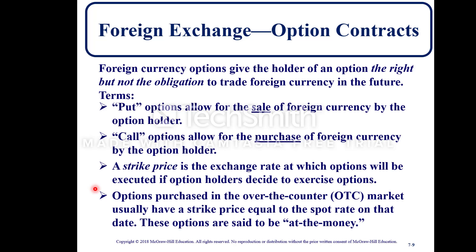Foreign currency options give the holder the right but not the obligation to trade foreign currency in the future. Key terms include put, call, and strike price. A put allows the option holder to sell a foreign currency; a call allows the holder to purchase foreign currency. The strike price is the exchange rate at which the option will be executed if the holder decides to exercise it. Options purchased in the over-the-counter market usually have a strike price equal to the spot rate on that date — these options are said to be at the money.